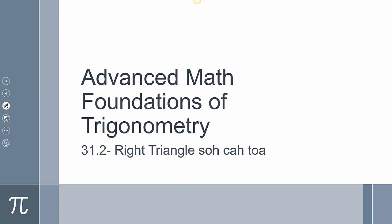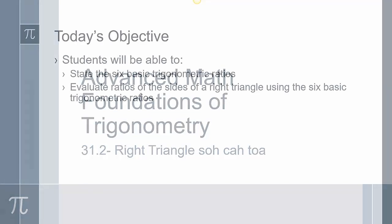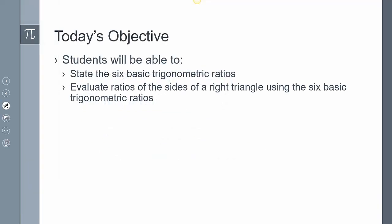Today is section 31-2, right triangle trigonometry, and we're going to take a look at the concept of SOHCAHTOA. We're going to state the six basic trig ratios, and we're going to evaluate trig ratios of the sides of a right triangle using those six basic trig ratios.